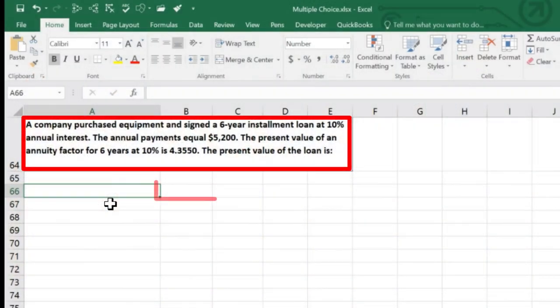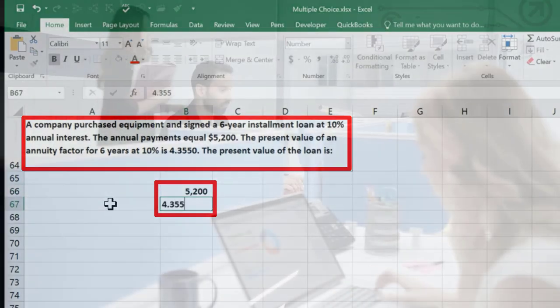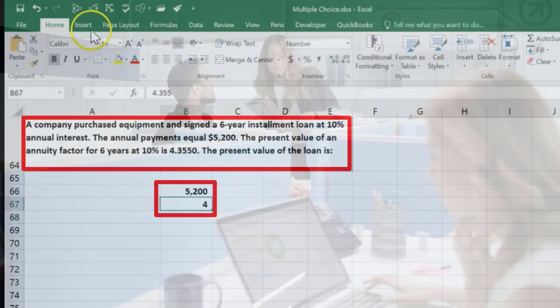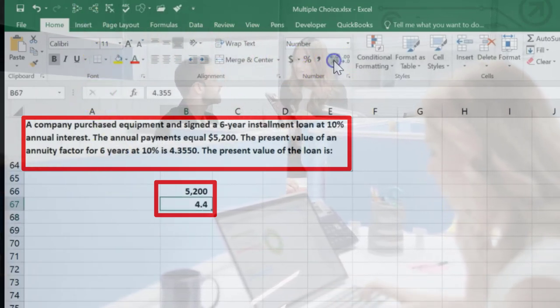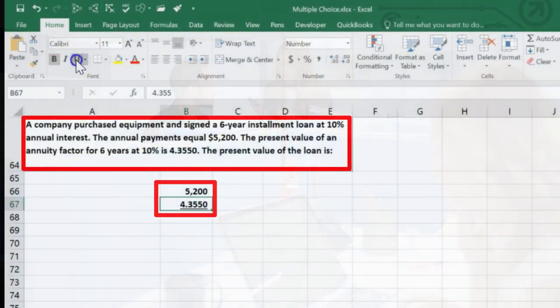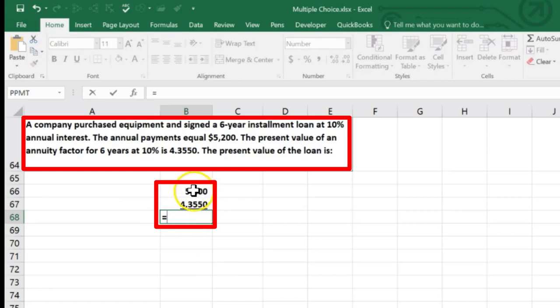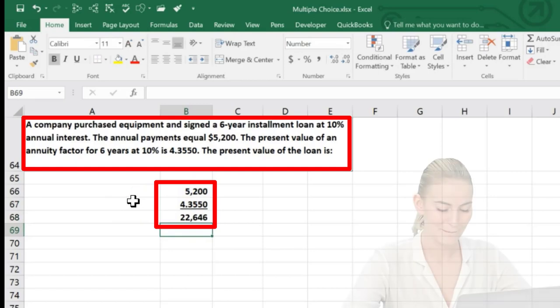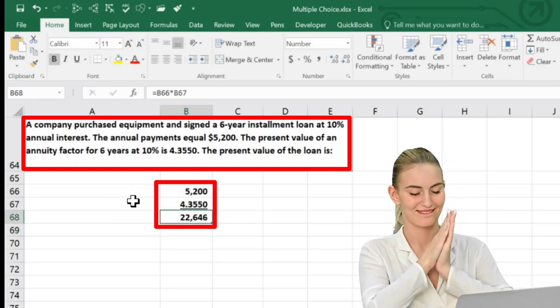in here. So we're going to take the $5,200 multiplied times the factor they just gave us from the table being 4.355. I'm going to go to Home tab, Numbers, add decimals, go to Home tab, Font, Underline, multiply this out. We're going to say the $5,200 times the 4.355 gives us $22,646.